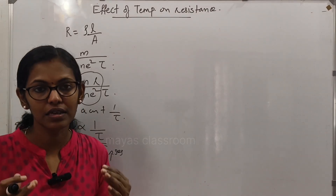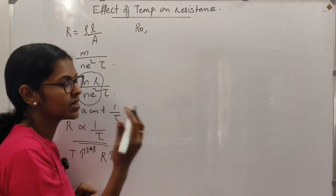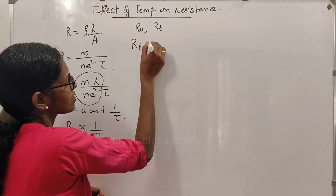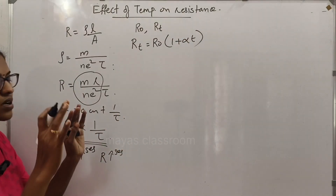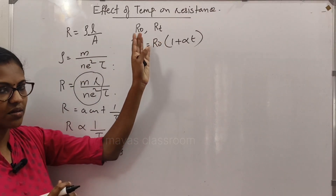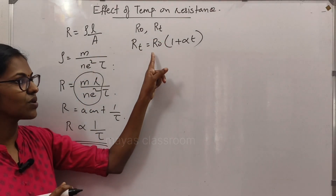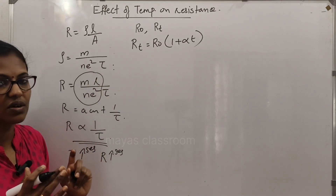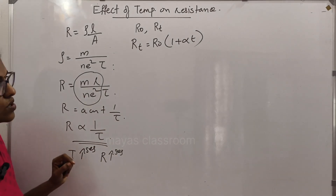Now, if we represent the resistance at 0 degrees Celsius as R0, and the resistance at T degrees Celsius as Rt, then Rt is equal to R0 into 1 plus alpha T. This formula gives us the resistance at any temperature T.